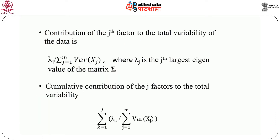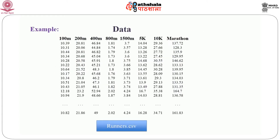The contribution of the j-th factor to the total variability of the data is given by lambda_j divided by the summation of variance of x_jj from 1 to m, where lambda_j is the j-th largest eigenvalue of the matrix sigma. The cumulative contribution of j factors to the total variability is given by the sum over k from 1 to j of lambda_k, divided by the summation of variance of x_j from 1 to m. Now, firstly we look at an example.